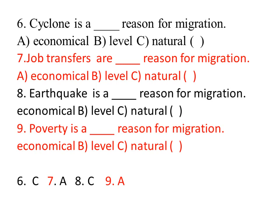Job transfers are a dash reason for migration. C is the right answer. Earthquake is a dash reason for migration. Options: economical or natural? Natural — answer C is the right answer.